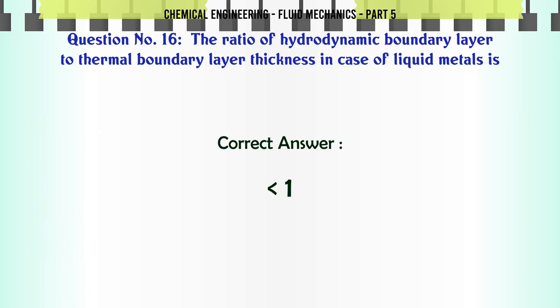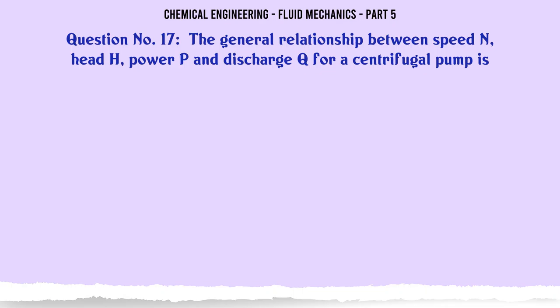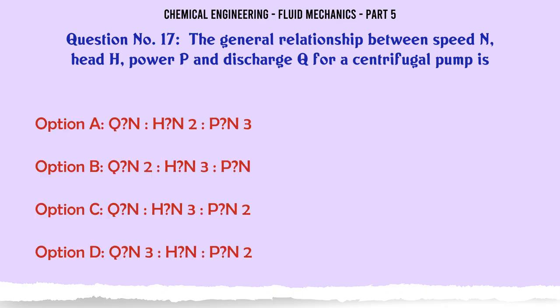The ratio of hydrodynamic boundary layer to thermal boundary layer thickness in case of liquid metals is: a) 1, b) <1, c) >1, d) 2. The correct answer is >1.